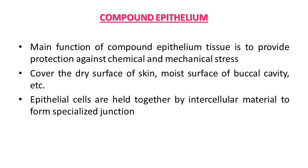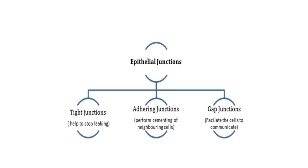Epithelium cells are held together by intercellular material to form specialized junctions in multicellular organisms. All cells in epithelium are held together with little intercellular material. Three types of cell junctions are found in epithelium and other tissues: tight junctions, adhering junctions, and gap junctions.